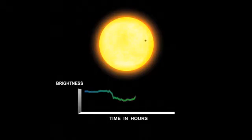But as it goes around, we would see the star getting a little bit dimmer, and a little bit brighter, and a little bit dimmer, every single time the planet passes in front of it.